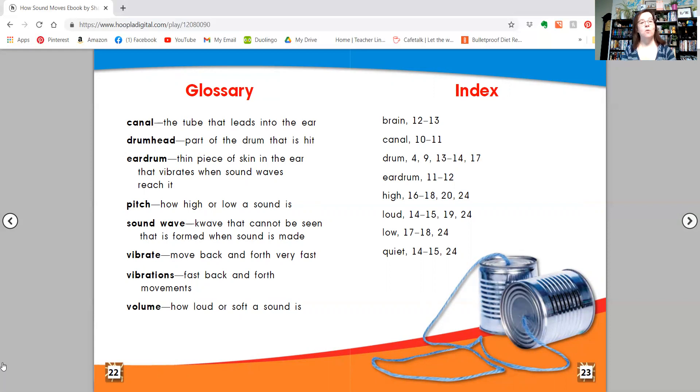And we learned about sound waves. That's a wave that can't be seen, but it's formed when sound is made. And then we learned about vibrating and vibrations. That means when something moves back and forth. And then we learned about volume. That's how loud or how soft a sound is.